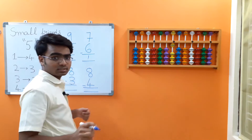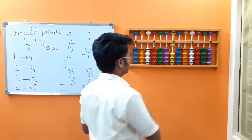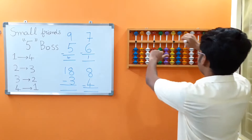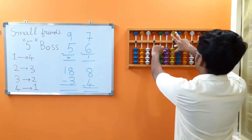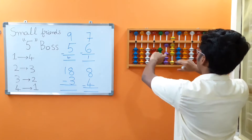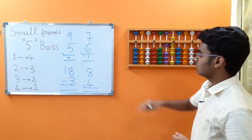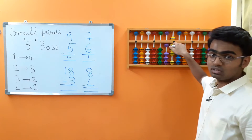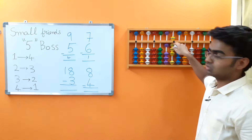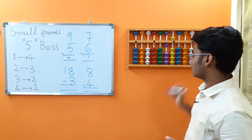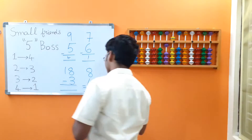18 minus 3. Let's place 18. We can subtract 3 directly here. You might have already understood now. We got the answer as 15.